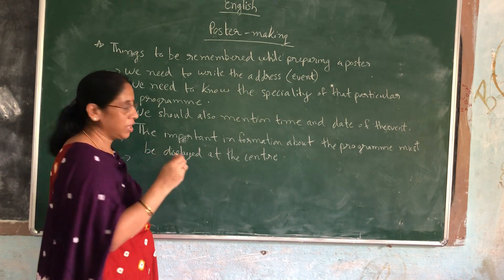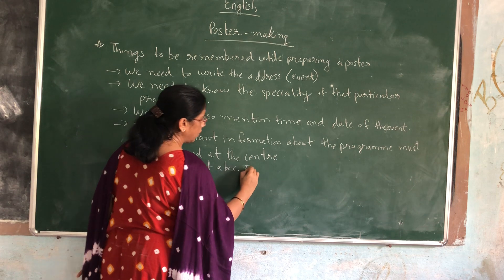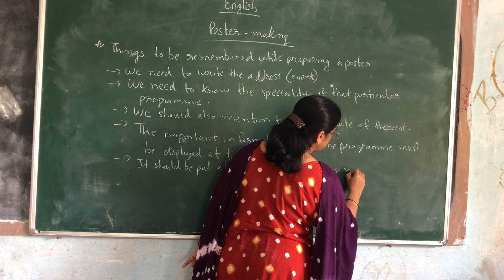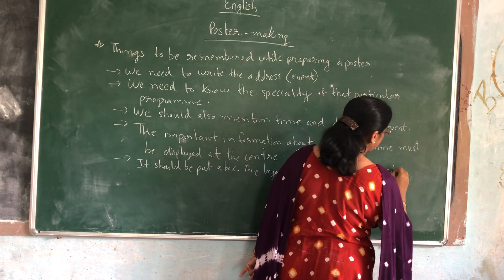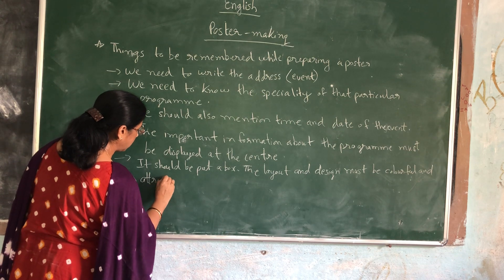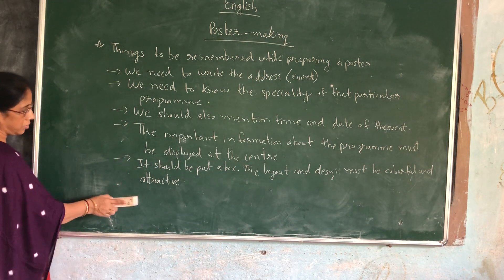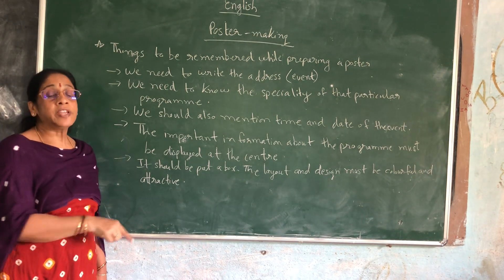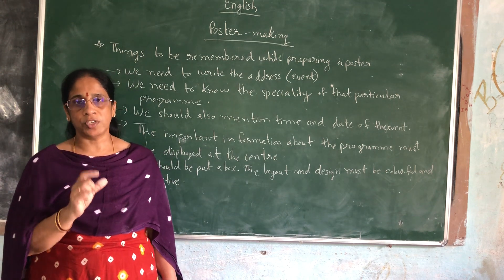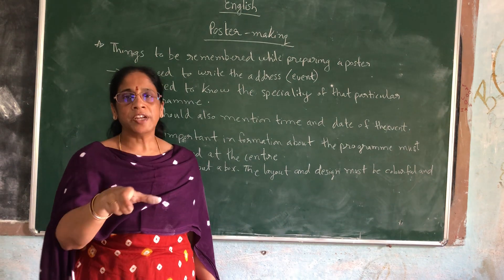The main thing is: it should be attractive. It should be put in a box, and the layout and design must be colorful and attractive. Lastly, draw a border — whatever is included should be kept in an enclosed area. Also, whenever you are writing a discourse, especially a minor discourse, take a fresh page and start writing on it. Don't try to continue half of it on one page and the next part on another page. Try to finish it in one length on a single paper.